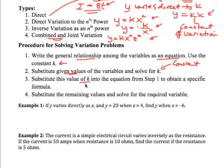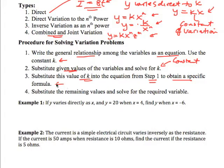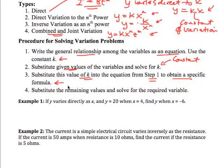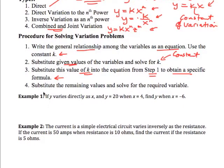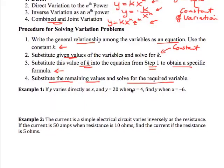We then substitute that value of k into the equation from step one to obtain a specific formula. So now we have an actual formula for the relationship between the variables. Then we substitute the remaining values and solve for the required variable.